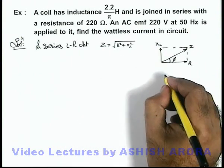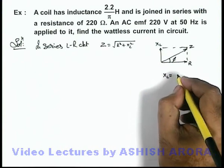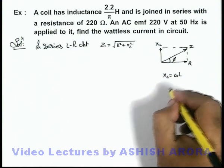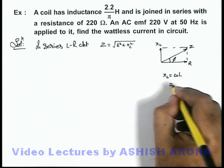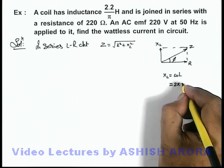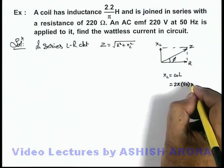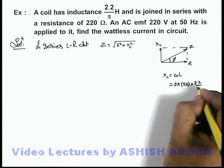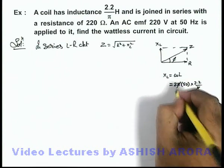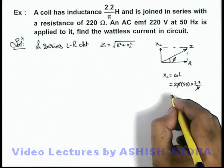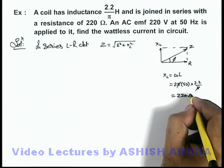Here we can calculate the value of XL, which is given as omega L. And the value of omega we can write as 2 pi multiplied by frequency multiplied by 2.2 by pi. If pi gets cancelled out, this will be 2.2 into 100, this is 220 ohms.